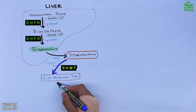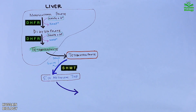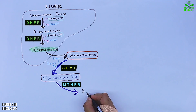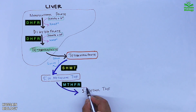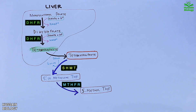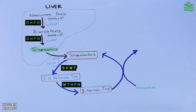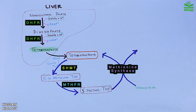This 5,10-methylene THF is acted upon by the MTHFR enzyme and gets converted into 5-methyl THF. It must be noted that these reactions are also taking place within the liver cells. Then 5-methyl THF, or 5-methyltetrahydrofolate, combines with homocysteine in the presence of methionine synthase, and from this reaction we get tetrahydrofolate and methionine.